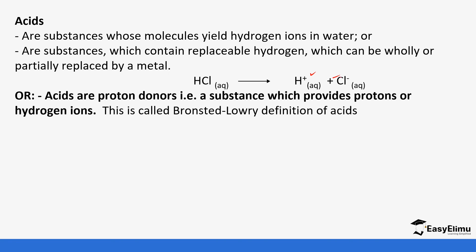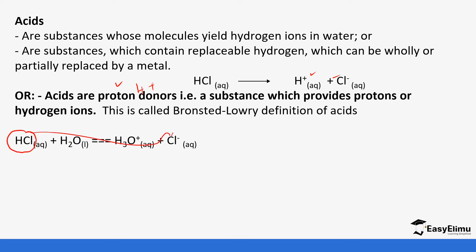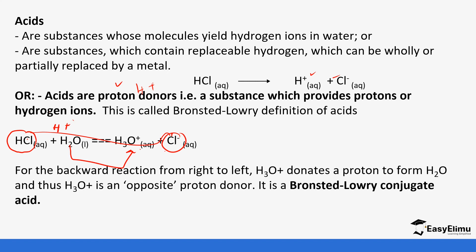The Bronsted-Lowry definition states that acids are proton donors — they give up hydrogen ions, providing protons in solution. For example, in this reaction, hydrochloric acid loses its hydrogen to form chloride ions, while water gains a hydrogen. So hydrochloric acid has donated a proton. From the backward reaction, right to left, hydrogen ions donate a proton to form water, making hydrogen ions a proton donor in that direction.